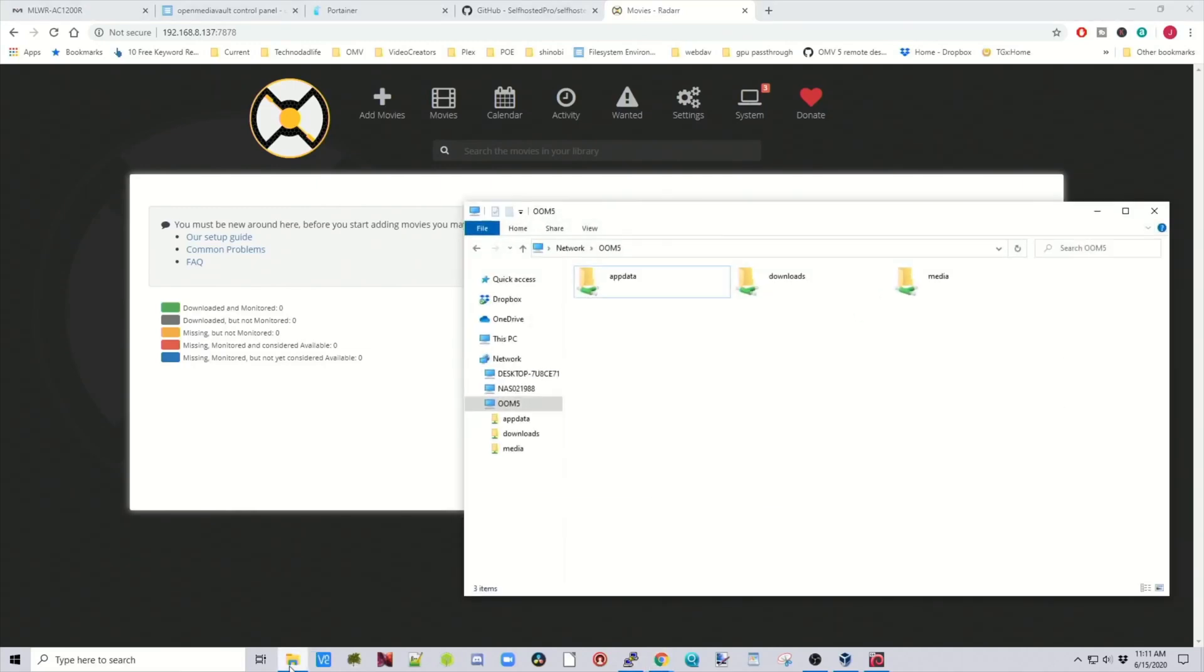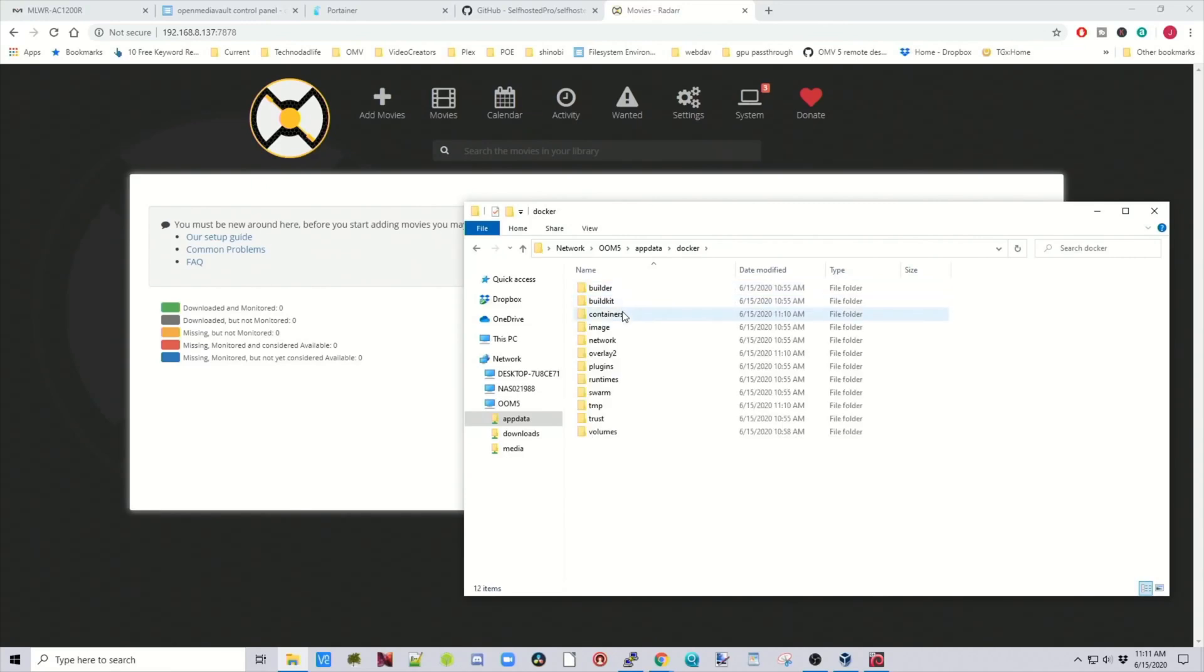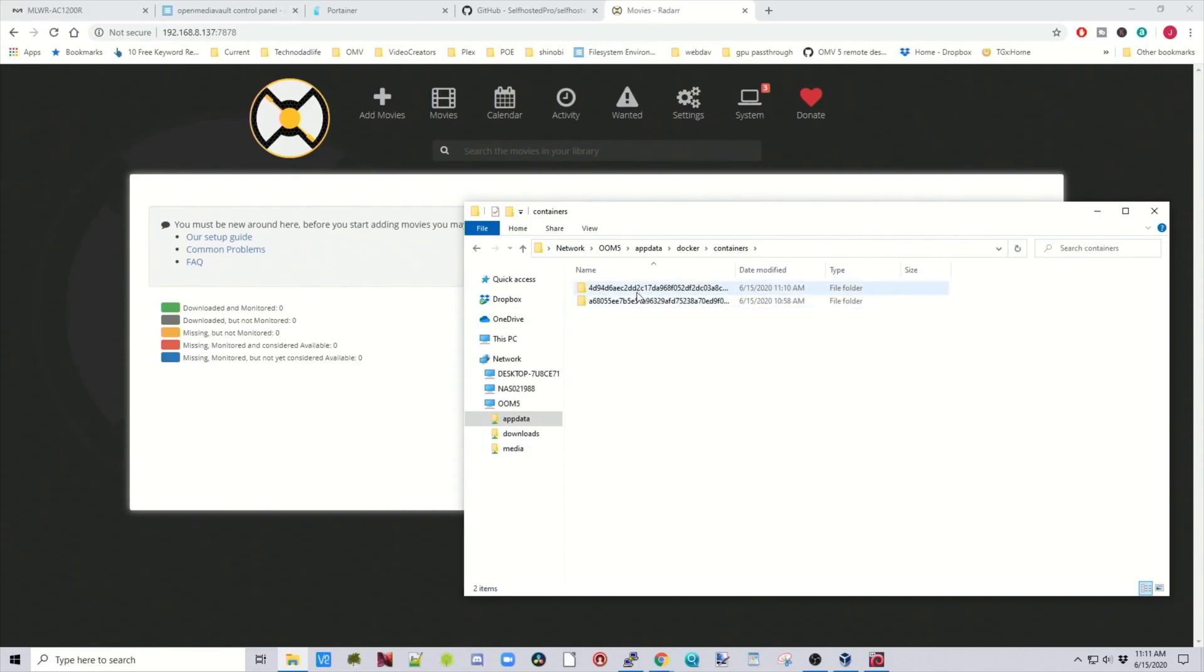If we go back to our shared folders, click on that, open up AppData, click on Docker. And now if we go into Containers, we can't tell. But now we have two containers, one of which is Portainer. The other one is Radar.